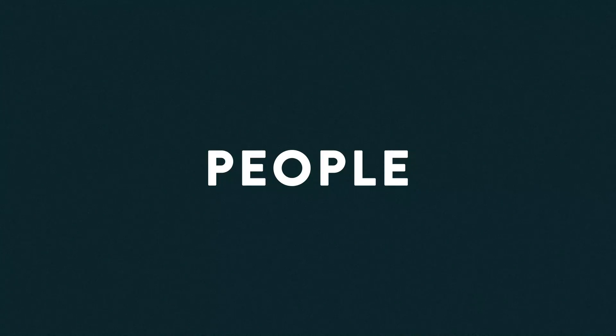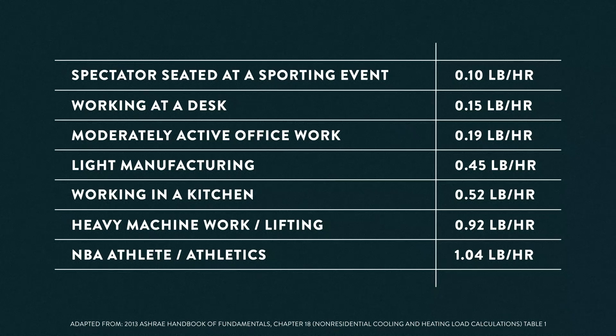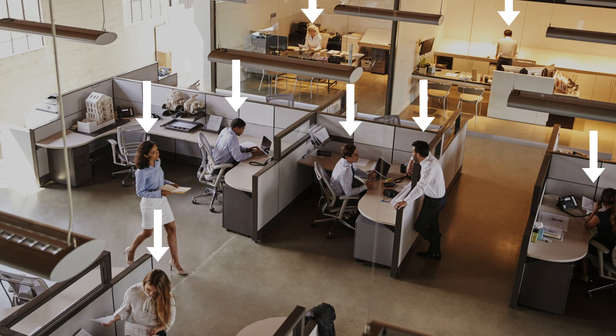Let's look at the first one: people. When we start looking at our loads, we need to look at what are the people doing and how much humidity do they add to the building. Let's go to a table such as this. On this table, we can see various activities and the amount of moisture load associated with it — everything from a spectator seated at a hockey game or a basketball game putting off a tenth of a pound of water per hour, to somebody working at a desk, light activity, light manufacturing, or working in a kitchen, ranging from a quarter up to a half a pound per hour. As people get more active, they put off more sweat, and that translates into more moisture, all the way up to an NBA athlete putting a pound per hour or more into that space. We need to know what they're doing and when they're doing it, and if that is at the peak time that we're trying to take the moisture out of the building. So what you need to do for the people load is take a head count: how many people are in that space and what are they doing? What's their activity level? So we can determine how much water they're putting into the air. Based on that, we've now got our people moisture load.